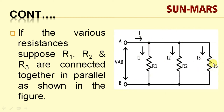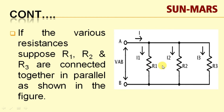Three resistors are parallel connected. We have terminals A and B — A is the positive terminal, B is the negative terminal — and the potential difference is VAB. The current is divided into three parts: I1, I2, and I3. How much current flows through each branch depends on R1, R2, and R3, since current I equals V divided by R, meaning current is inversely proportional to resistance.